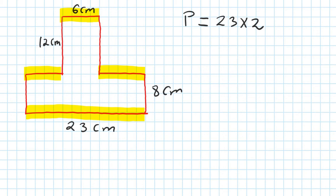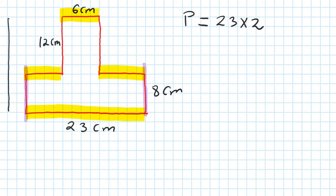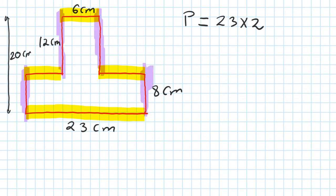Now this one here - this side here, let's call it A, so this is also A as well. All the way from here down here is A plus 12, which is 20 centimeters. So this one here add this one here is 20 - the same as this length add this length. So we add 20 times 2, and that will cover everything.